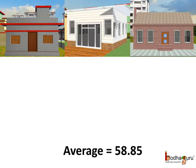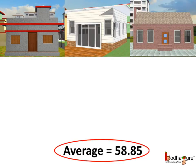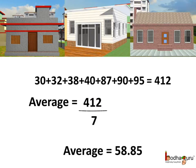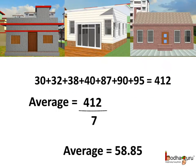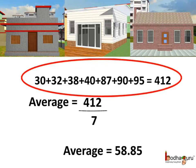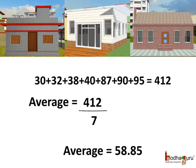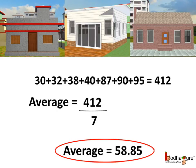First he tried to make a decision based on the average price. The agent said the average price was around 58 lakhs. The agent added up the prices of all 7 houses: 30 plus 32 plus 38 plus 40 plus 87 plus 90 plus 95, amounting to 412 lakhs. Then he divided by 7 — the number of houses — giving an arithmetic mean of approximately 58.85 lakhs.